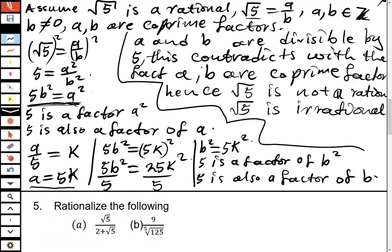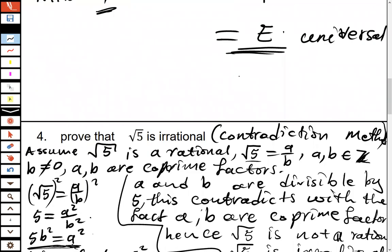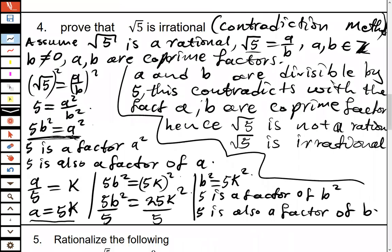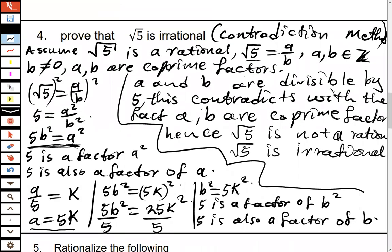A student joined late and asked for a re-explanation. The instructor notes the session is recorded so the student can review it, but briefly clarifies: we use the contradiction method, where we assume √5 is rational and find something that contradicts our assumption.